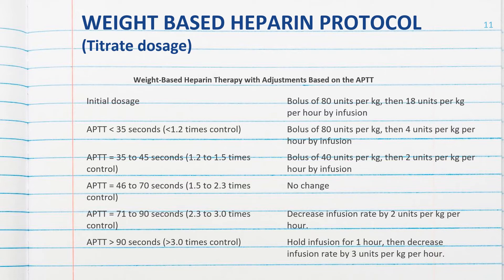For example, if the PTT is less than 35 — meaning less than 1.2 times the control — the instructions direct you as the nurse to bolus 80 units per kilogram, then follow that with a drip of 4 units per kilogram per hour. This is where it becomes very important to know how to do math: you need to calculate 80 units per kilogram for the bolus, and then continue infusing the heparin at a different rate requiring another calculation.